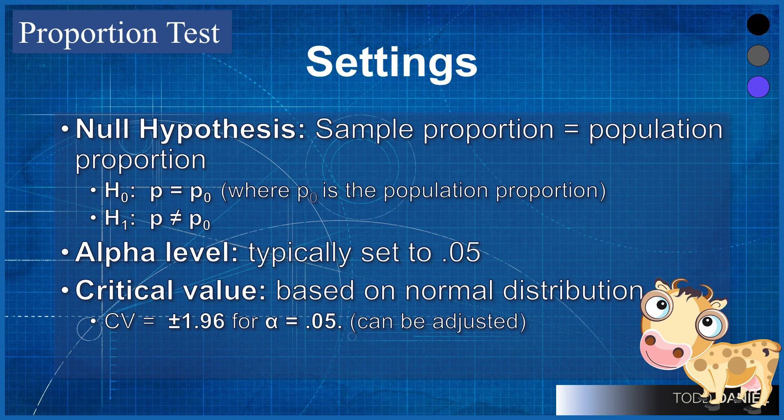The null hypothesis assumes that the sample proportion and the population proportion are the same. We would write this in symbols as H₀: p = p₀, and we would substitute the actual population proportion where it says 0.80. The alternative hypothesis, H₁: p ≠ p₀, again substituting the value of the proportion from the population. Typically we use a 0.05 alpha level because we're using a normal distribution, then the 0.05 alpha level means our critical value will be a positive or negative 1.96 for that alpha of 0.05.